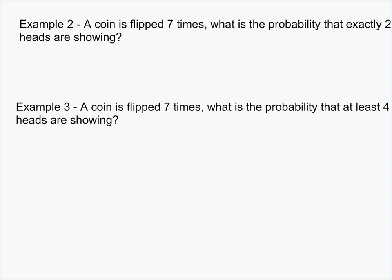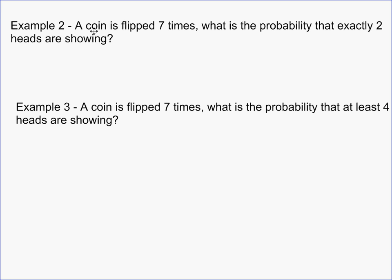The next problem is a coin problem. A coin is flipped seven times — what is the probability that exactly two heads are showing? First, how many ways can you flip seven coins? Each flip has two possibilities, so the total is two multiplied together seven times, which is 2 to the seventh — that's your total number of outcomes.